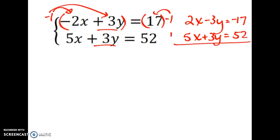And now I have a pair of opposites, so I'm going to add these two equations straight up. So 2x plus 5x is 7x. Negative 3y and positive 3y, those zero out. Negative 17 plus 52 is 35. So I have 7x equals 35. Nice, pretty equation. I can just solve it for x by dividing both sides by 7. And I got x equals 5.